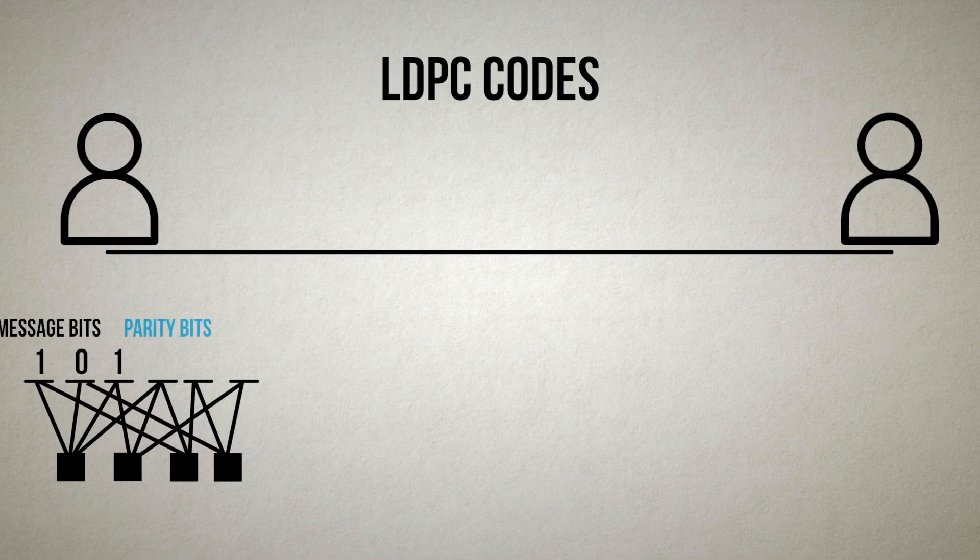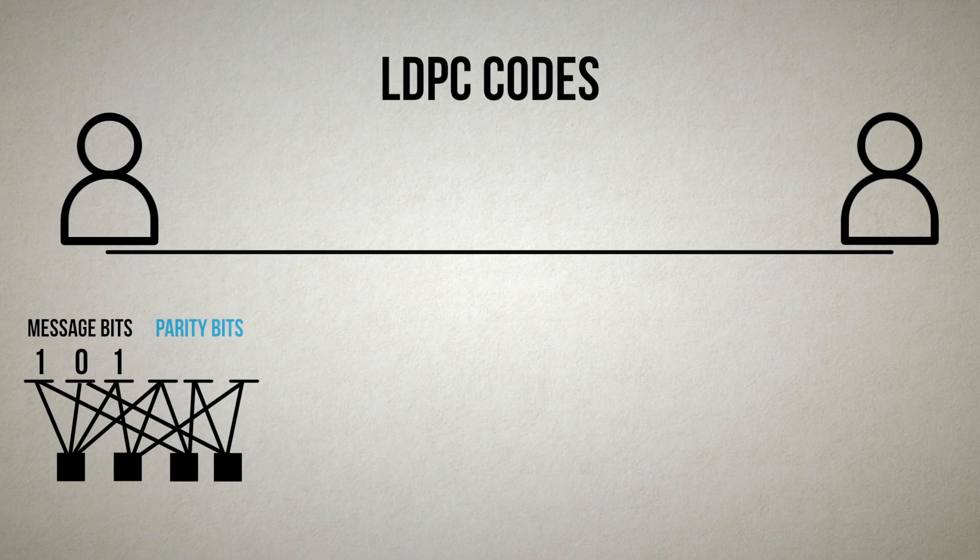Encoding is now done by finding a collection of parity check bits so that all the check sets have an even number of ones. This involves solving a simple set of linear equations.